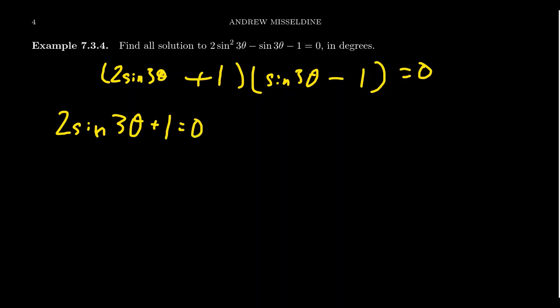So consider the first one, 2 sine of 3 theta plus 1. This becomes 2 sine 3 theta equals negative 1. You subtract 1 from both sides. Divide by 2, we're going to get sine of 3 theta equals negative 1 half. So when is sine equal to negative 1 half? That's what happened in the third quadrant and in the fourth quadrant. In the first quadrant, the reference here is going to be 30 degrees. So I'm looking for angles in the third and fourth quadrants, which reference the 30 degrees.